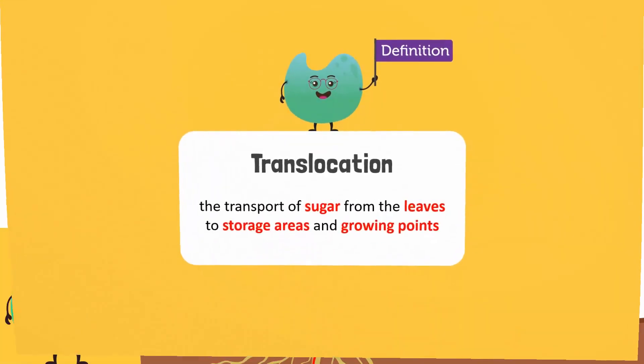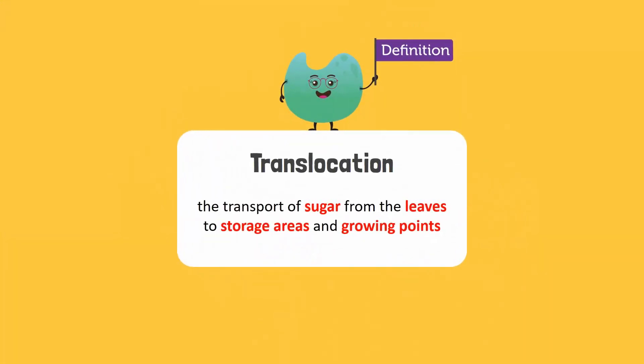The transport of sugar from the leaves to storage areas and growing points is called translocation.